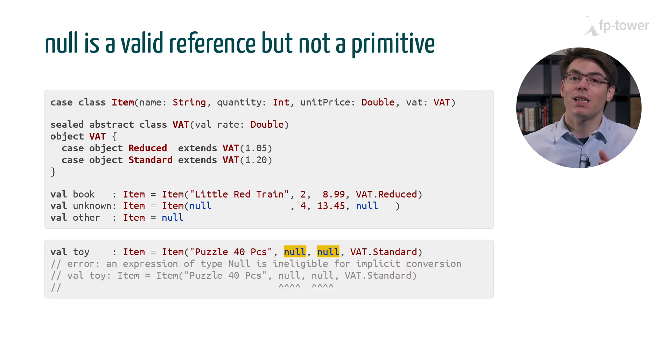However, if we try to assign null to a primitive type such as Int or Double, we would get an error. The error message is far from clear, but it basically means that we can't use null for quantity and unit price.